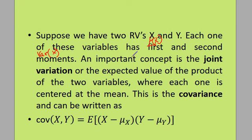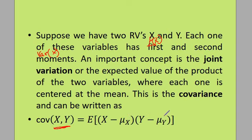The concept of covariance is the joint variation — the expected value of the product of the deviations of two variables. The covariance is defined as: E of (X minus mu of X) times (Y minus mu of Y).